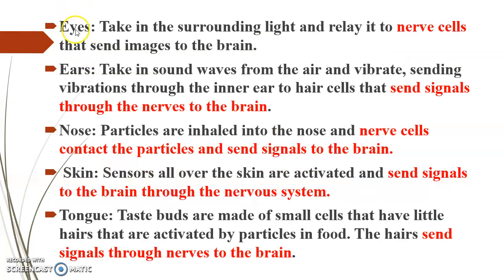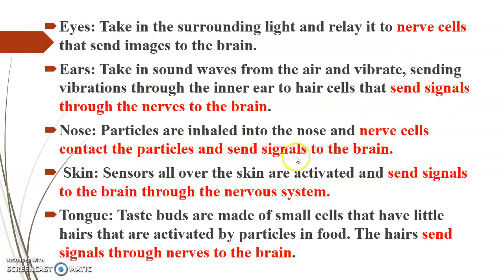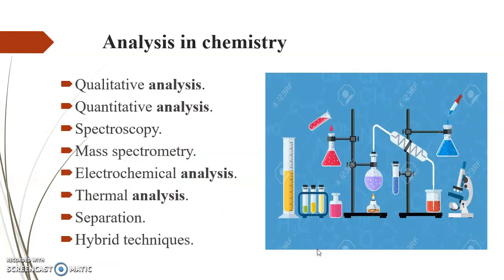If we look into the working of eyes, ears, nose, skin, and tongue, everywhere we could see that whatever they receive, it is sent to the brain through the nerve cell as signals. They are sent as signals to the brain with the help of the nervous system or the nerves.